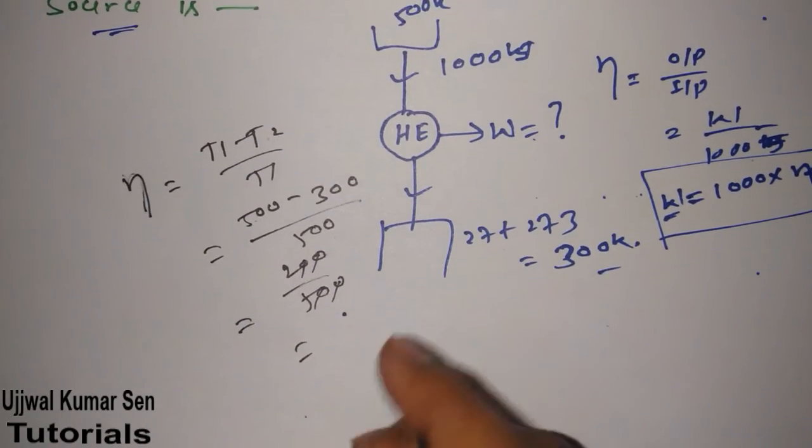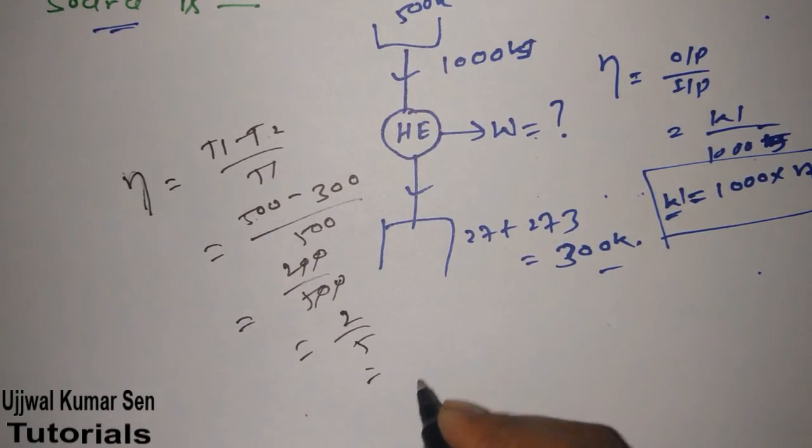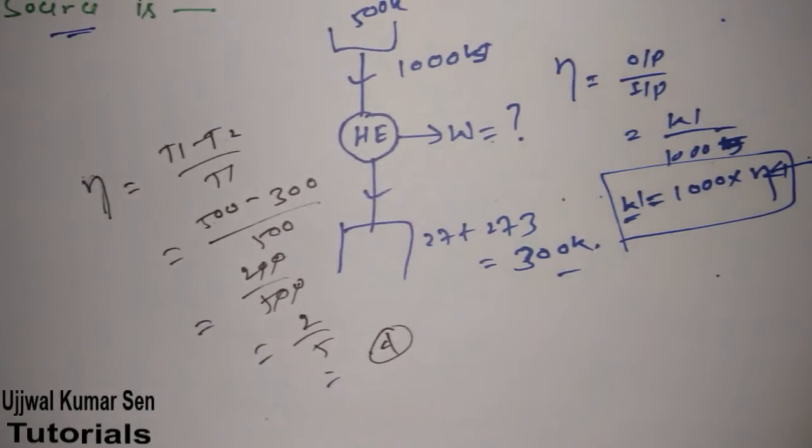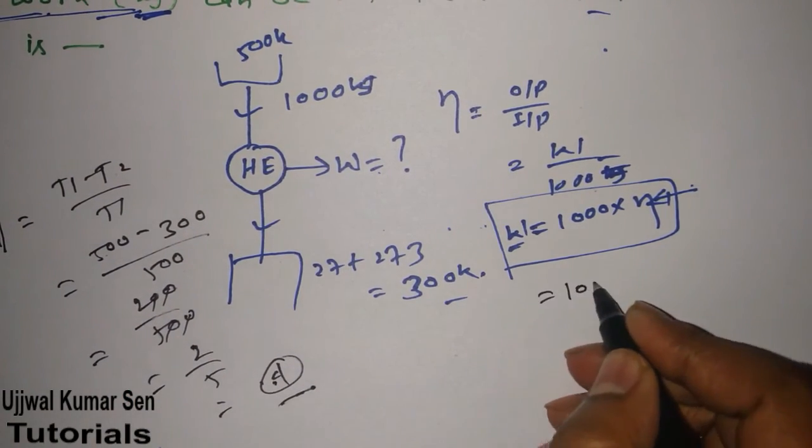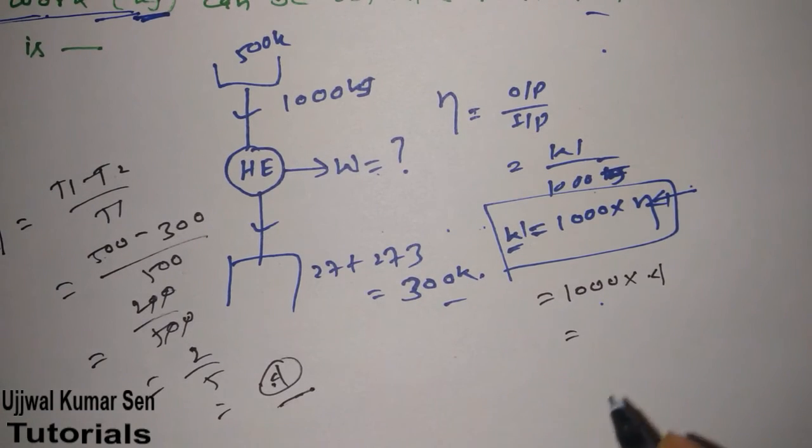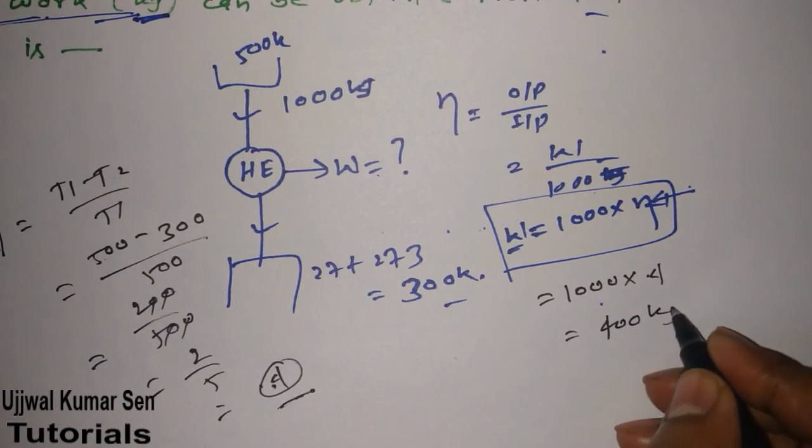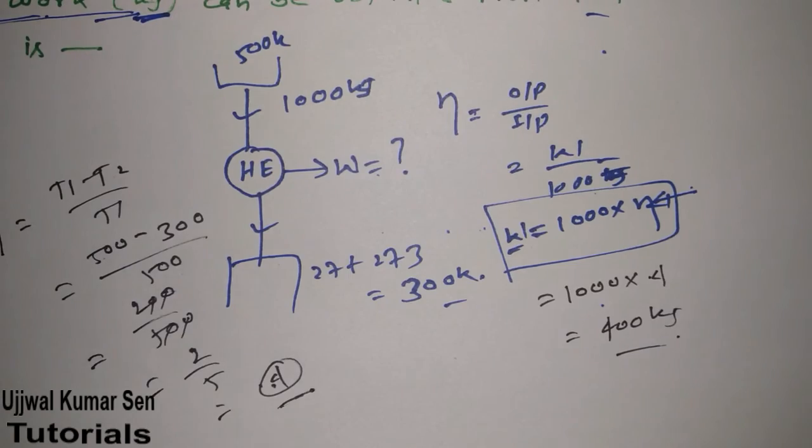It's 200 by 500, which cancels to 2 by 5, which equals 0.4. Now put this efficiency value of 0.4 here, so we get 1000 times 0.4 equals 400 kilojoules.